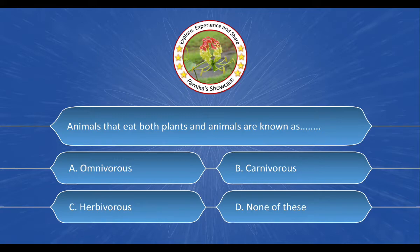Next question: Animals that eat both plants and animals are known as dash dash. The options are A. Omnivorous, B. Carnivorous, C. Herbivorous, D. None of these. And the correct answer is option A. Omnivorous.